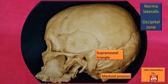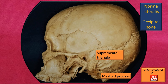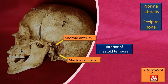Back to a typical Norma Lateralis view. We have already identified the inferior temporal line and its continuity lower down with the supratemporal crest. Right below the crest and immediately behind the external acoustic meatus is a triangle called the suprameatal triangle, an important part of the mastoid part of the temporal bone.